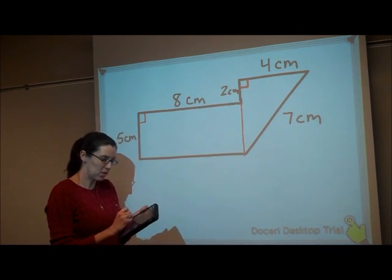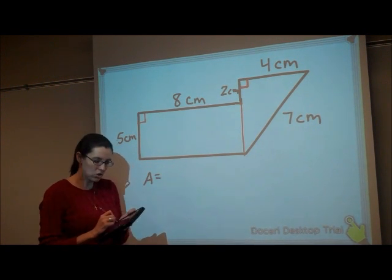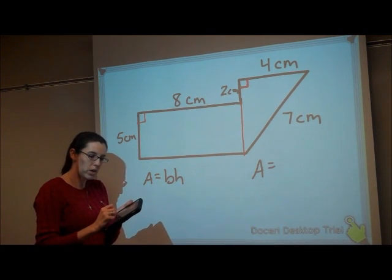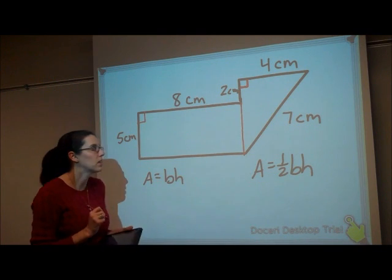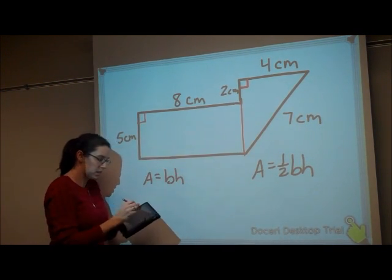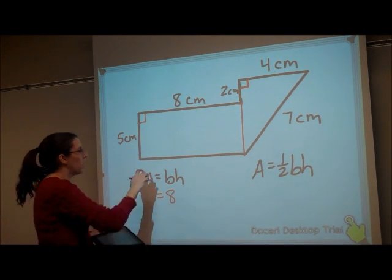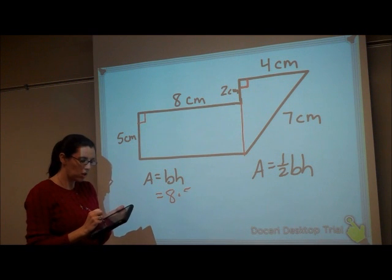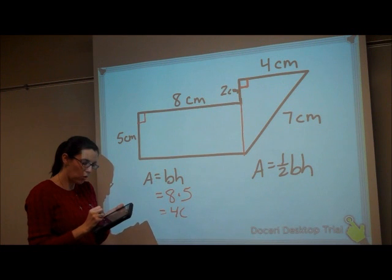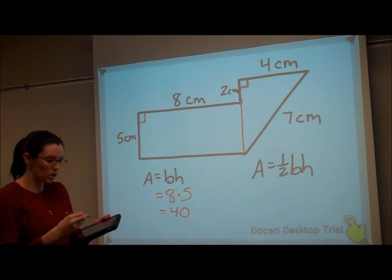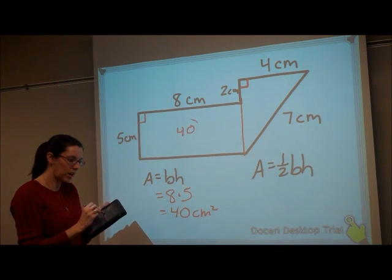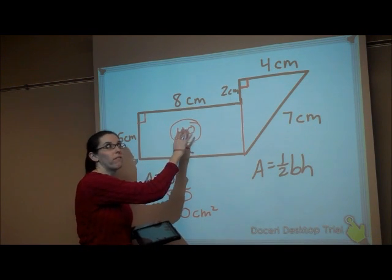So writing down my formulas, area of this rectangle would be base times height. Area of this triangle is one-half base times height. So looking at my rectangle, my base is 8, my height is 5. So the area of this rectangle would be 8 times 5, which is 40. All of my units are centimeters, so it's 40 centimeters squared. So I always write the number inside that shape so I know I found that one.